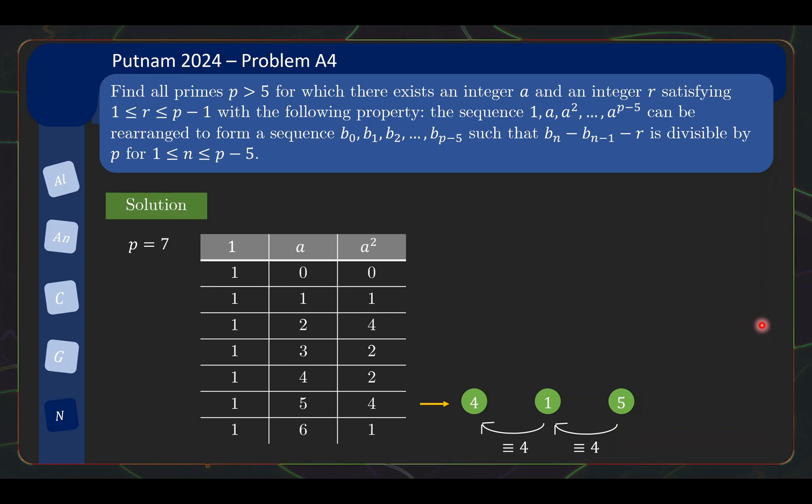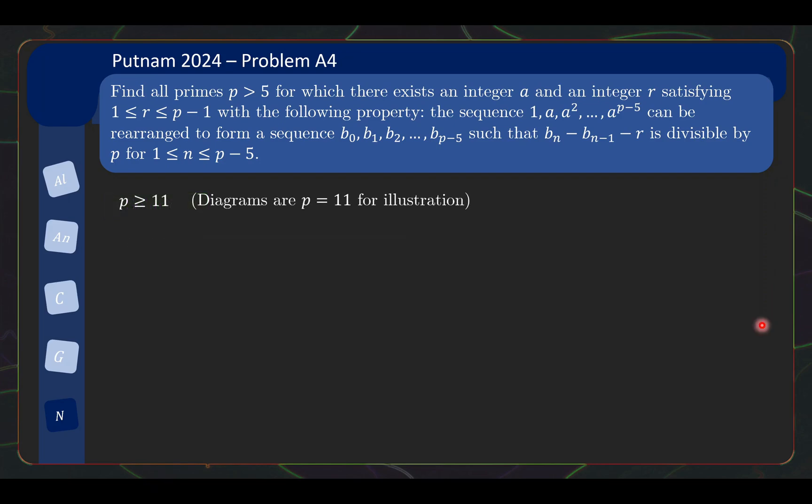How about the next case p = 11? So it turns out that there's not going to be any other solutions, but when you explore p = 11, you will gradually inch yourself towards the proof on why there's no solutions. So let's take a look at the case p ≥ 11, and all my diagrams are going to be drawn for p = 11 just for illustration, but the proof works for all p ≥ 11.